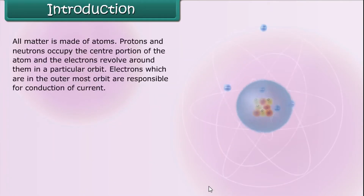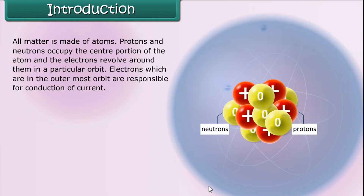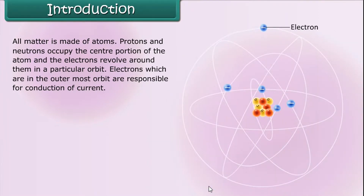All matter is made of atoms. Protons and neutrons occupy the center portion of the atom, and electrons revolve around them in a particular orbit. Electrons which are in the outermost orbit are responsible for conduction of current.